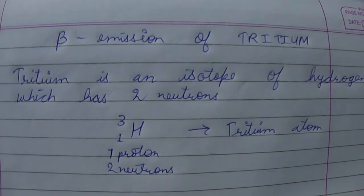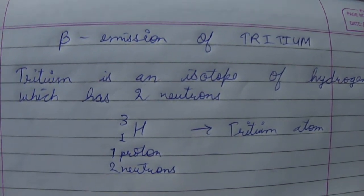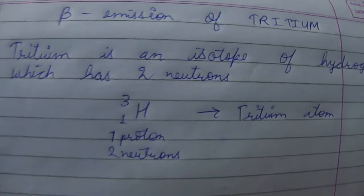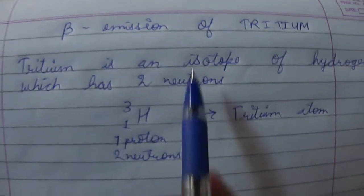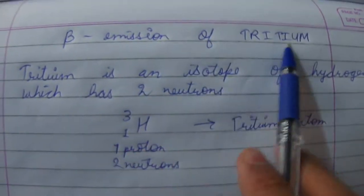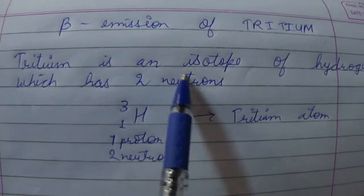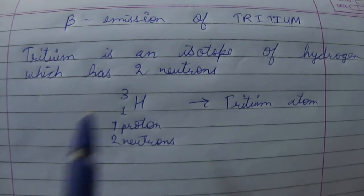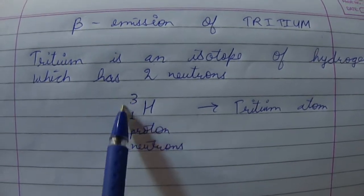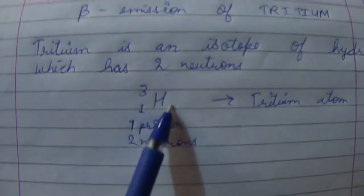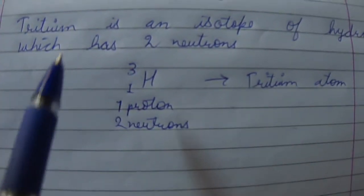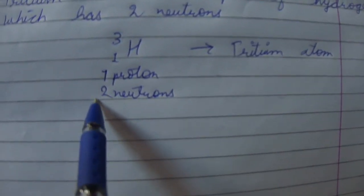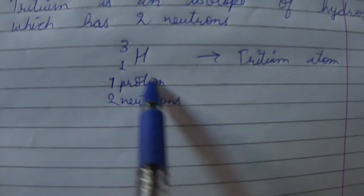In this video I am going to explain the beta emission of tritium. Tritium is an isotope of hydrogen which has two neutrons, so its atomic mass is three. Atomic mass equals number of protons plus number of neutrons, so it has two neutrons and one proton.